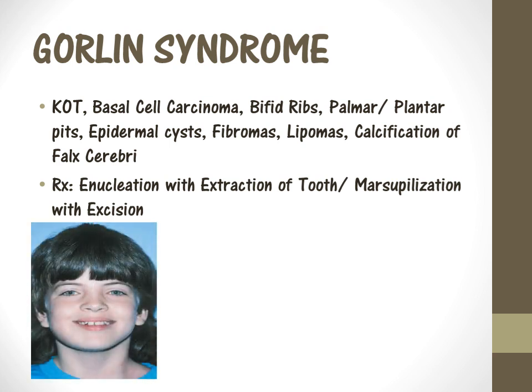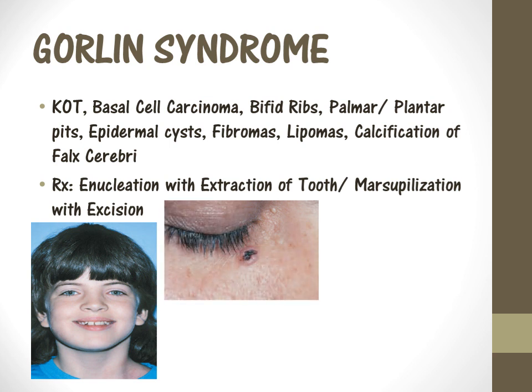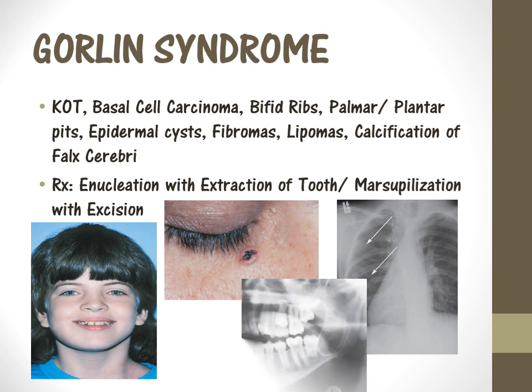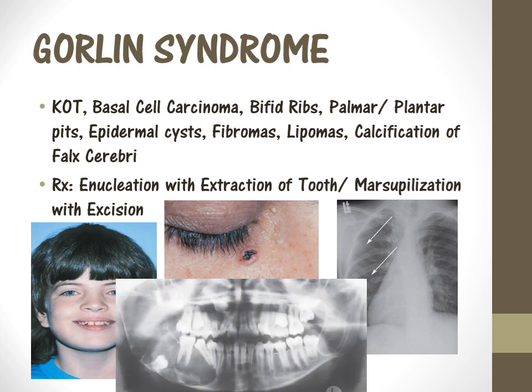In Gorlin syndrome, the picture shows an example where the right side of the jaw of the child is enlarged because this child has keratocystic odontogenic tumor on the right side. Gorlin syndrome is associated with basal cell carcinoma, bifid ribs where the ribs are split into two, and multiple keratocystic odontogenic tumors. Gorlin syndrome is very important from an exam point of view.